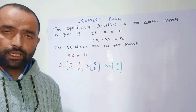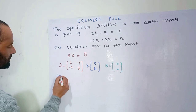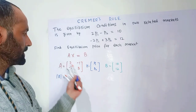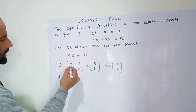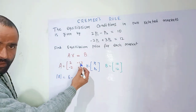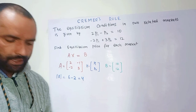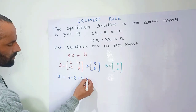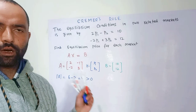The first step is to take the determinant of the coefficient matrix. We multiply the principal diagonal elements: 2 times 3 equals 6. Then we subtract the product of the non-principal diagonal elements: minus 2 times minus 1 is plus 2. So the determinant comes out to be 4. If the determinant were zero, the system of equations would not be feasible, but here it is greater than zero.